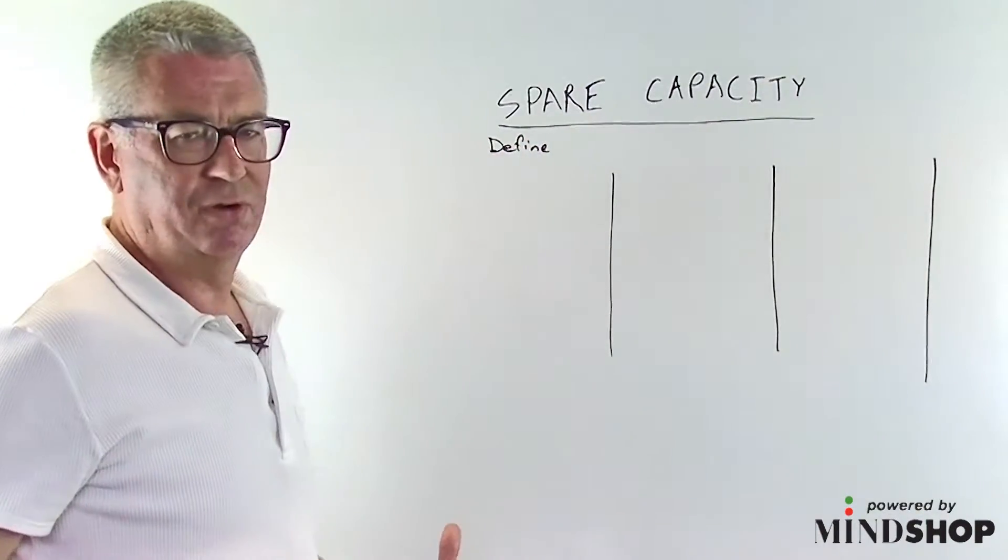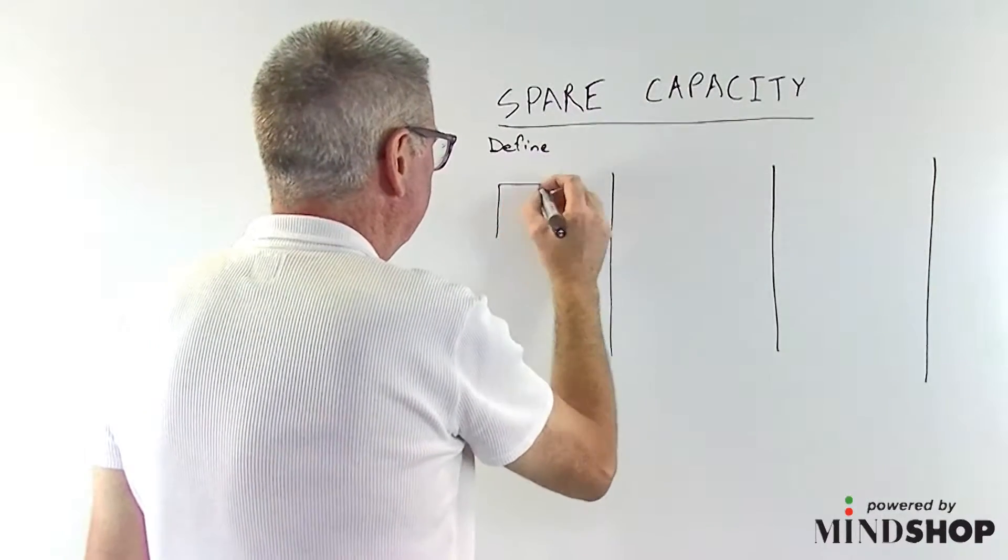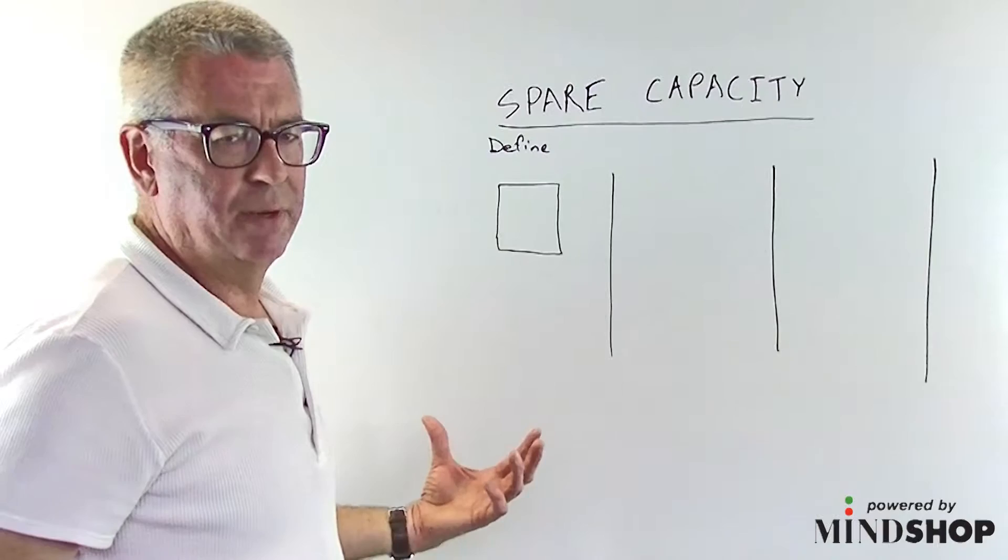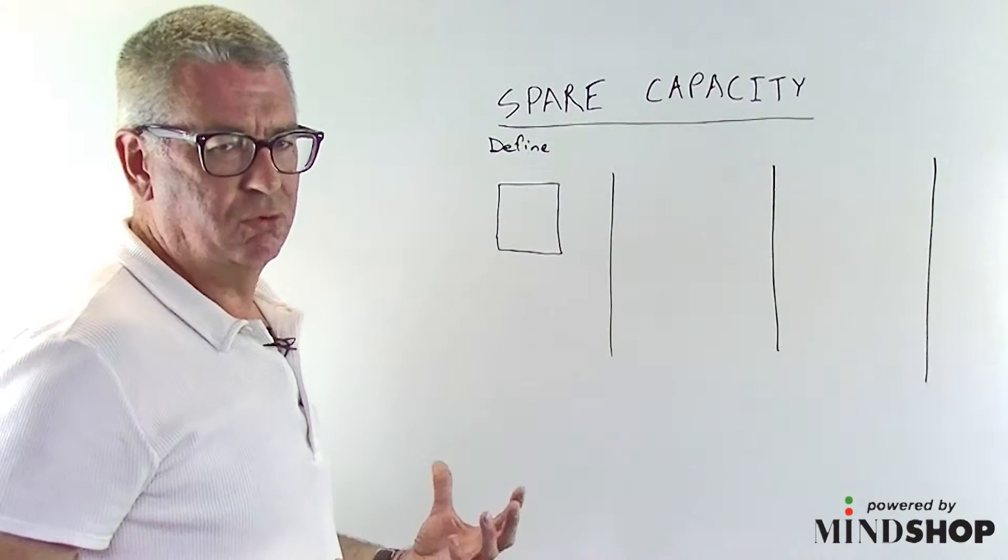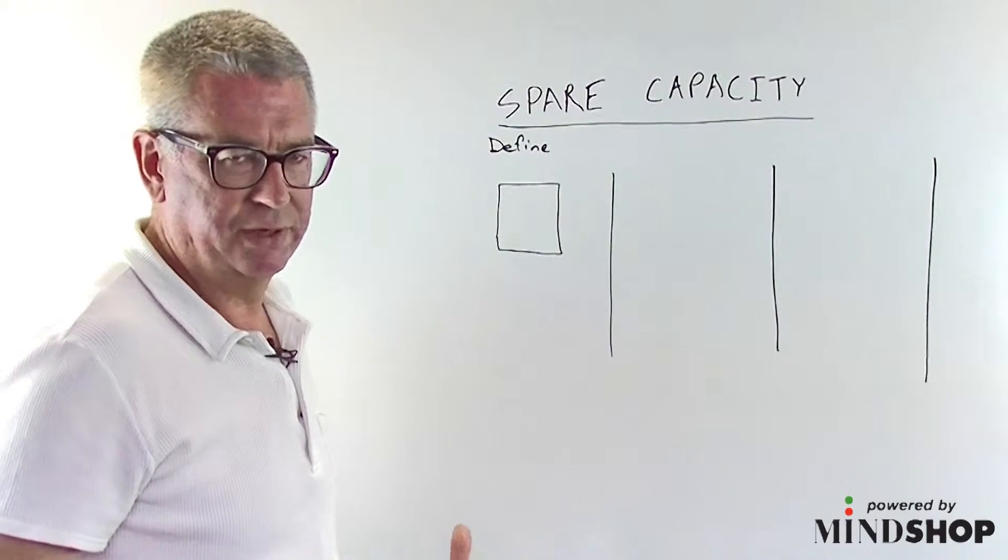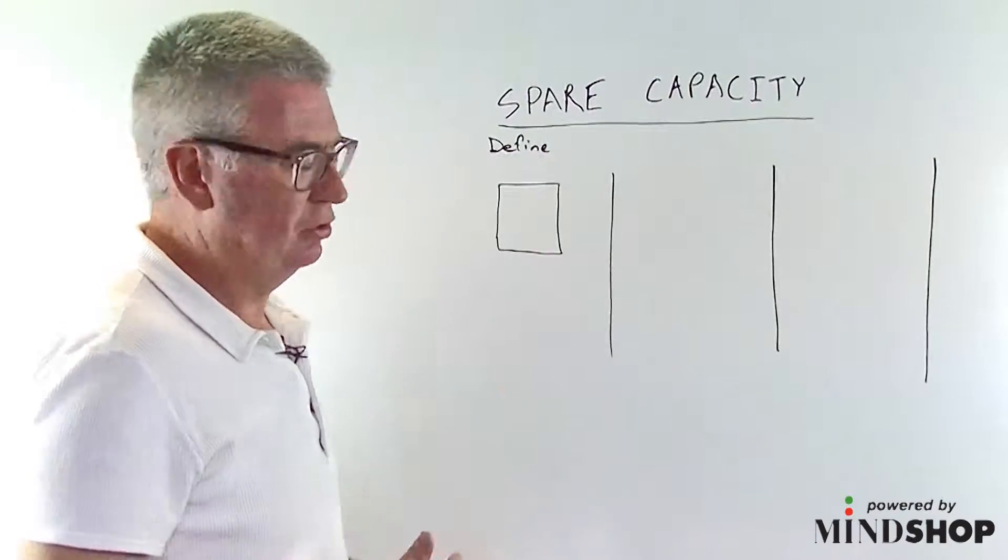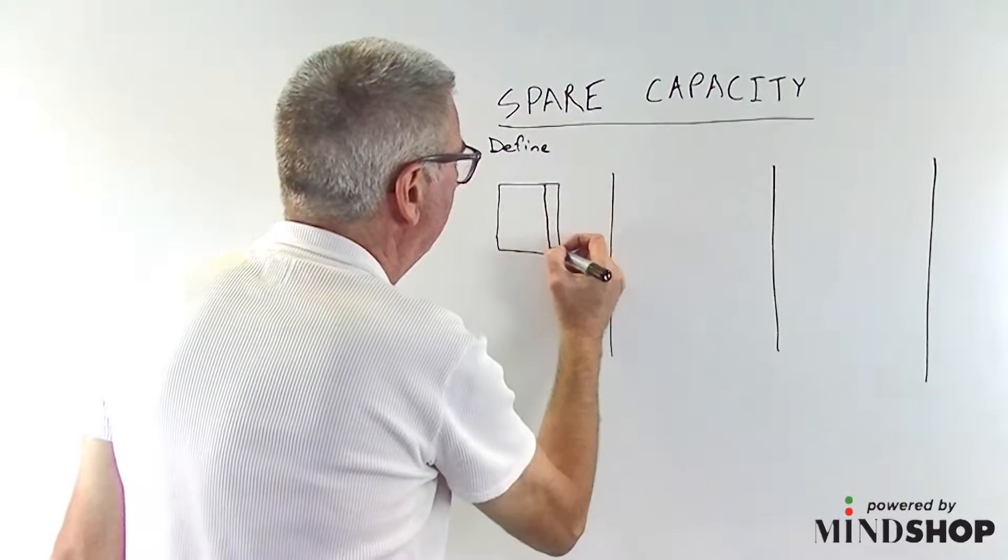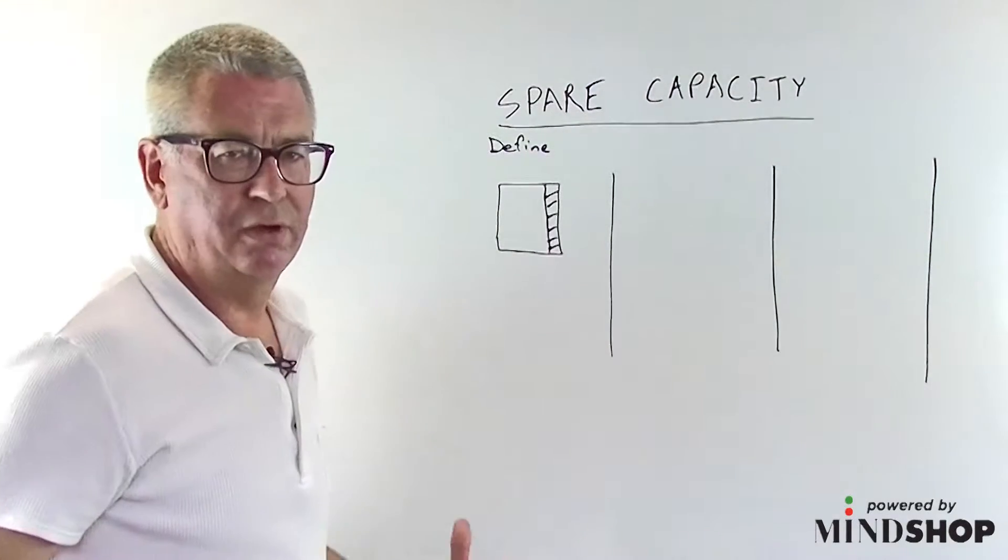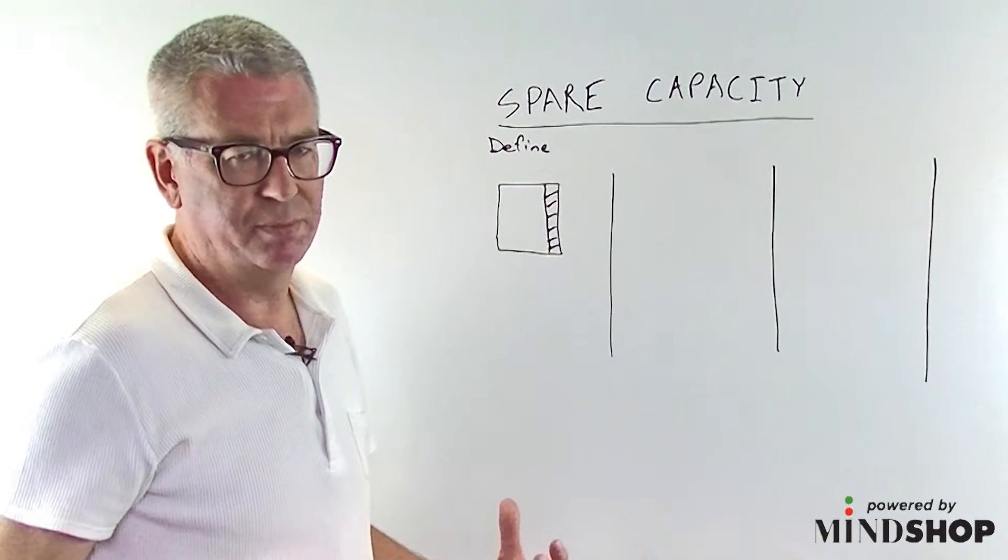So firstly let's define spare capacity. Imagine that's a building. It's quite easy to get your head around an unused portion of a building. So let's say we've got 15% of our building that's unused. So we're paying the money but we're not getting any value from that. It's clearly spare capacity.